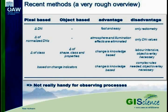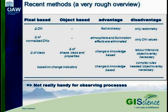You can also normalize your images and do a delta based on the pixels. The advantage is that you can cut out atmosphere and illumination effects. But you're still just working on the DN values, not really on objects. A step further is working on delta of classes or objects — looking at changes of shape, changes of class properties, changes of properties of the objects. This is more knowledge-based, but it's very labor intensive. We do it manually, just overlaying objects and looking at what has changed.